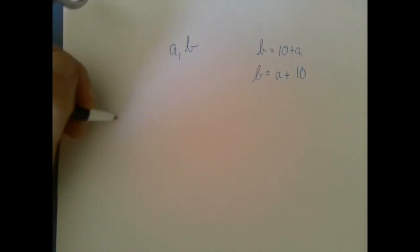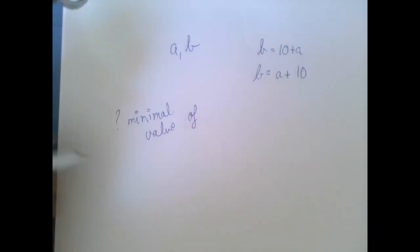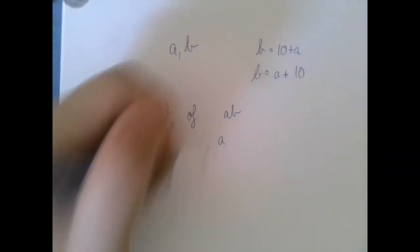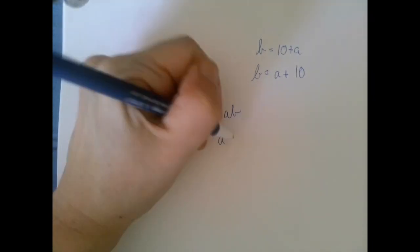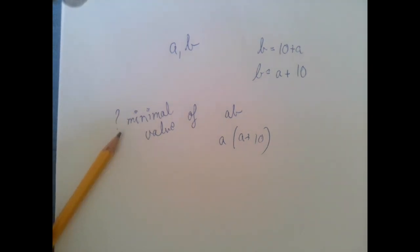We have to find the smallest value, or minimal value, of ab. Well, we just have an expression for b, so a can remain a, but then b can be written as a plus 10. And what we have is something very useful for a minimal value, right? For a minimal value, we should have a quadratic expression, and that is exactly what we have.